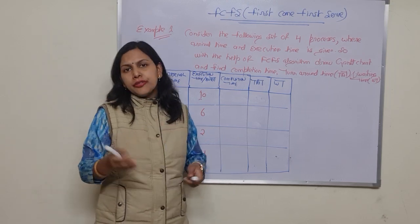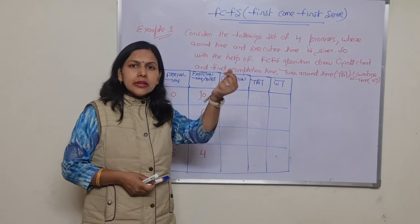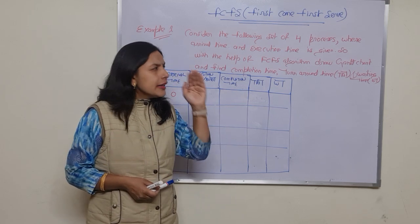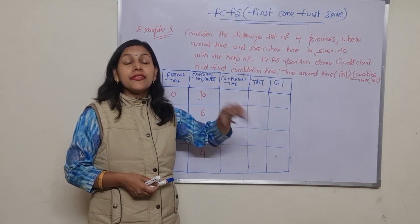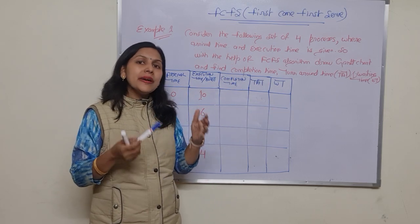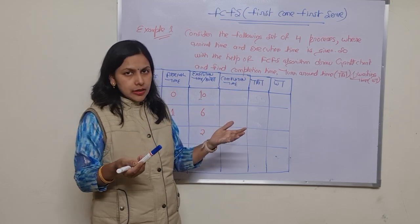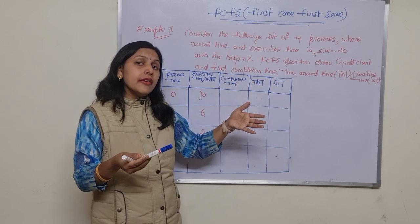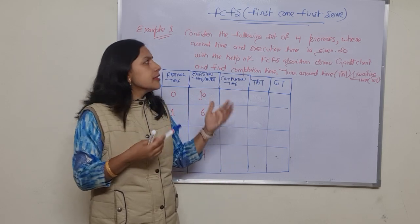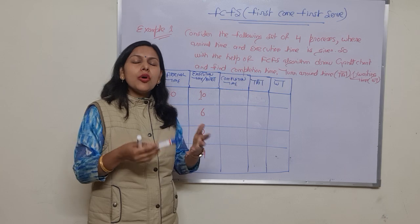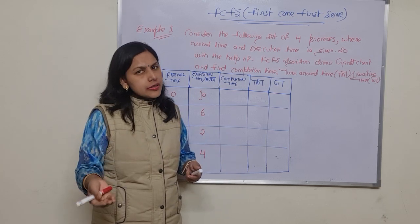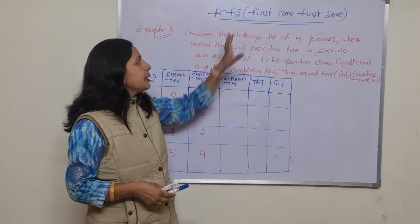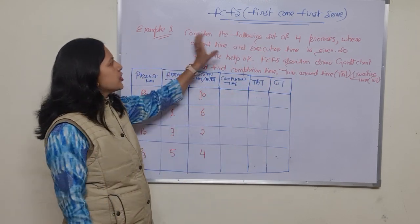Today's operating systems have a multi-processing environment. In the context of FCFS, I want to explain exactly how the operating system works with multiple tasks. I'll start with the first and simplest algorithm — FCFS — and after that I'll cover other algorithms like Shortest Job First and Round Robin scheduling. But in today's video, the main focus is on FCFS.